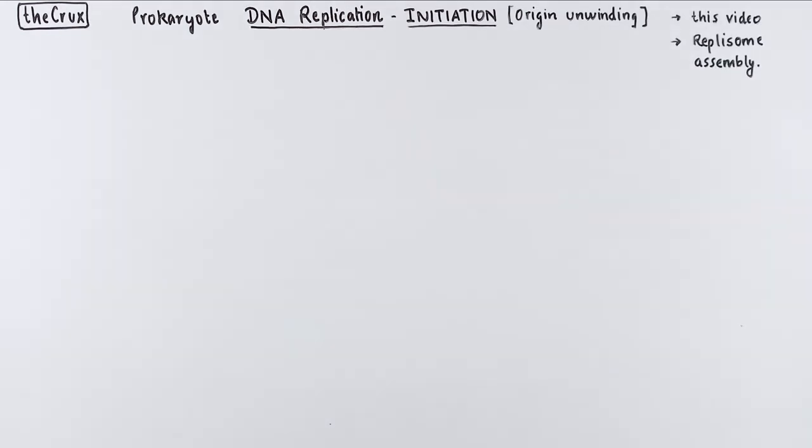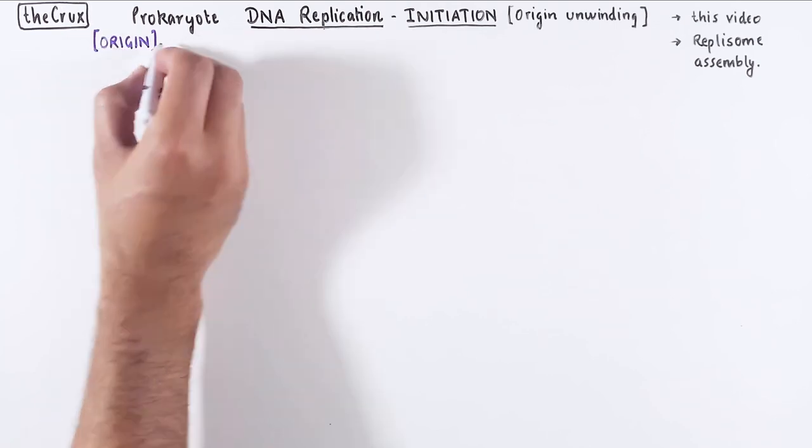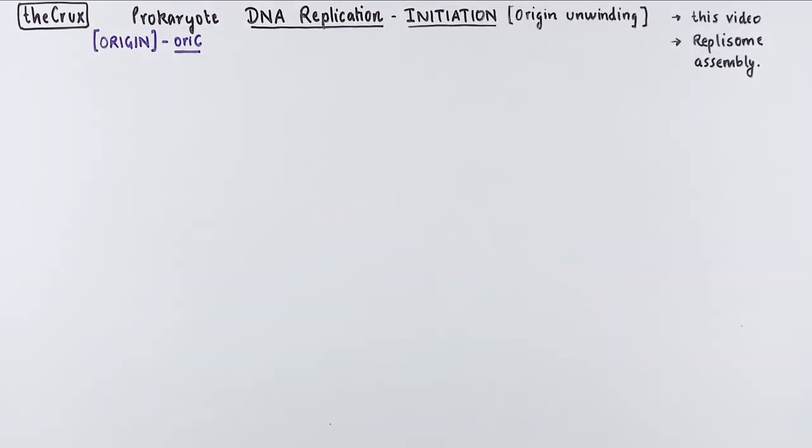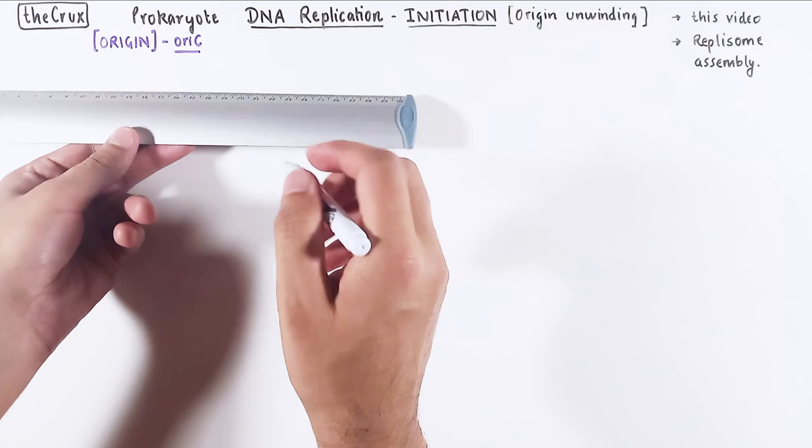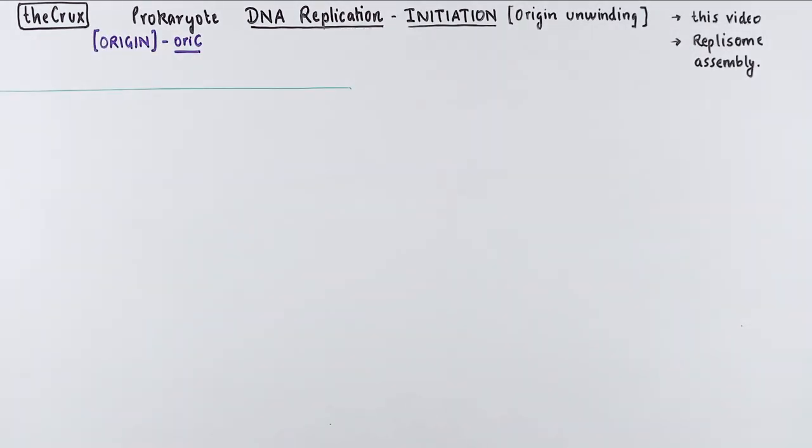And the second part will be the replosome assembly. Before we dive into the origin unwinding, I will give you a quick recap of the DNA replication origin structure of bacteria. I discussed the origins in much more detail in the previous video, so if you are looking for details, please watch that.